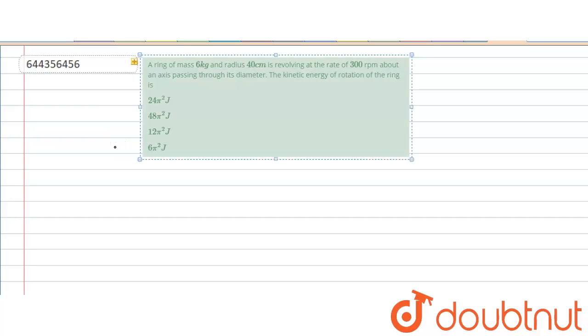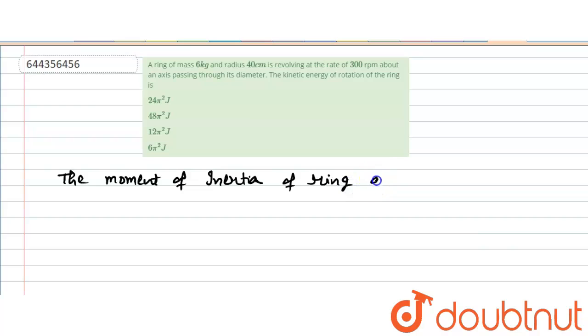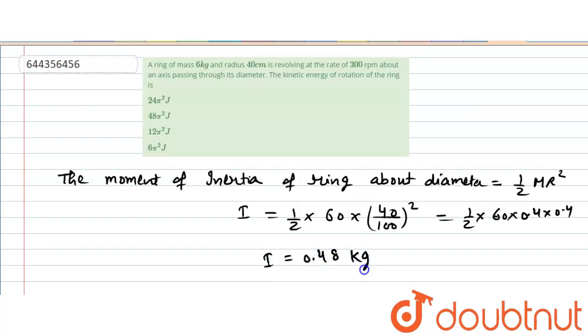We know the moment of inertia of ring about diameter is half m r square. So, moment of inertia will be half into m that is 6 kg into r that is 40 divided by 100 square. So, moment of inertia will become half into 6 into 0.4 into 0.4. So, it will be moment of inertia will become 0.48 kg meter square.